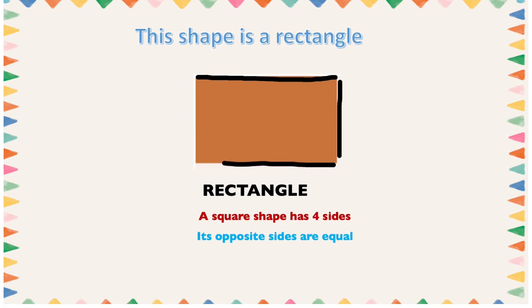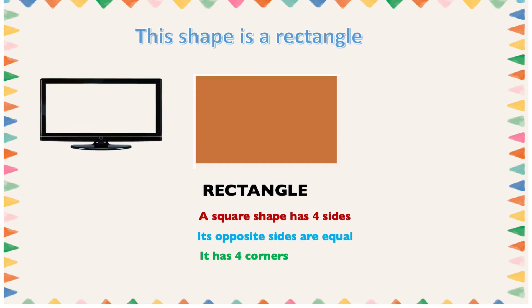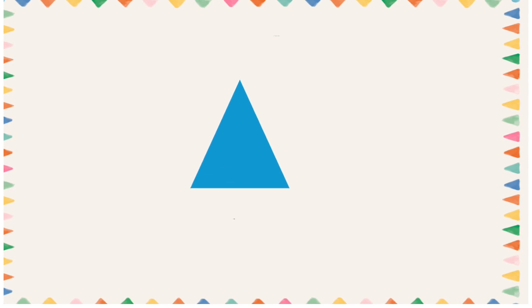It has four corners: one, two, three, four. You can find it in objects such as a television, an envelope, a green board, and a frame. All these objects have a rectangular shape.